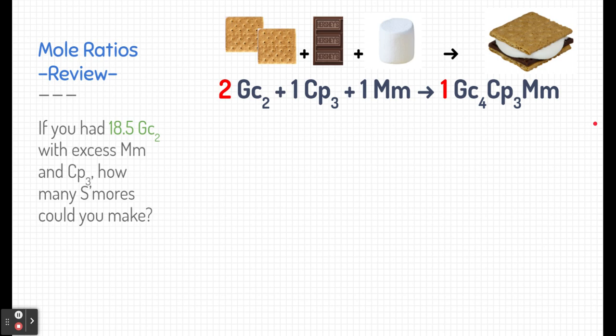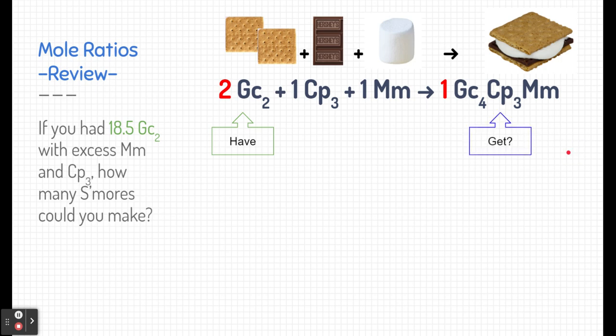Here's an example problem. Let's say we had 18.5 graham cracker squares and we had plenty of marshmallows and chocolate pieces. How many s'mores could we make from that? If we follow along with stoichiometry, we have a certain amount in our recipe and we want to know how much of another thing we're going to get from that.